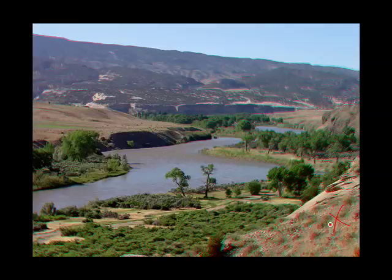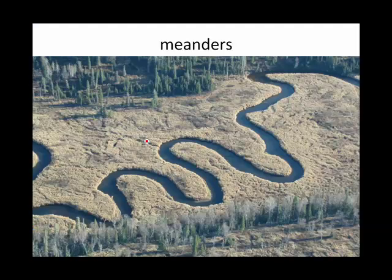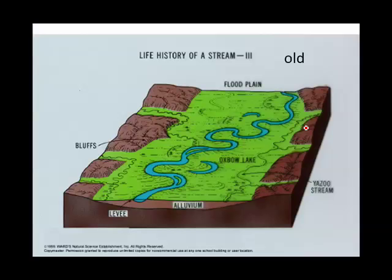We're standing on the bedrock looking down at the floodplain. Here you can see it has eroded into the bedrock, making the stream valley wider. Here we have a good example of some more meanders. When a meander cuts itself off, you have what's known as an oxbow lake. By the time a river gets very old, the floodplain is so wide that a meander almost never gets to erode away any of the bedrock again.